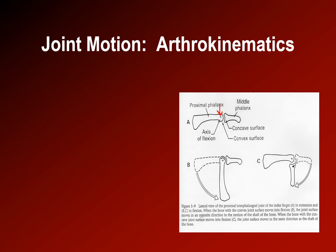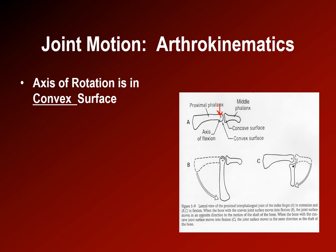On the other hand, if the bone that's moving has the concave surface — such as the distal phalanx — then the joint surface moves in the same direction as the shaft of the bone. Both cases involve rotation around the joint surface. So if the convex bone moves one way, its joint surface goes the opposite direction; if the concave bone moves, its joint surface goes the same direction.